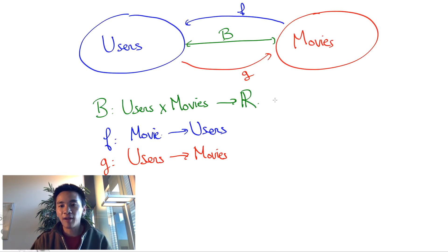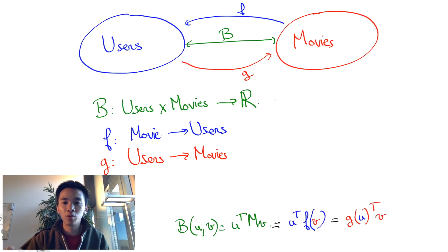And the two maps, F and D, are going to be compatible with B and with one another in the sense that B of U and V is equal to G of U transposed V and it's also equal to U transposed F of V.